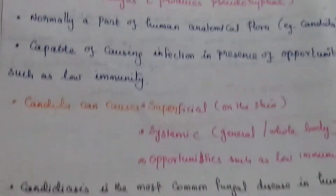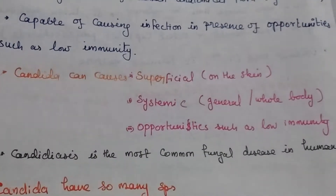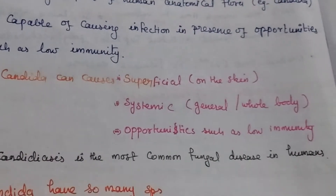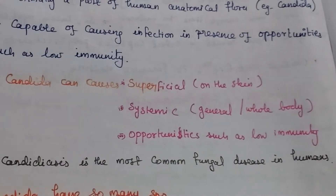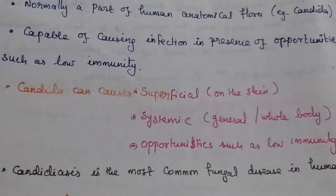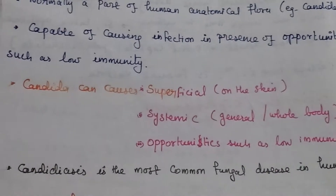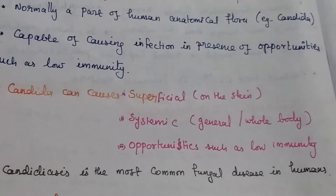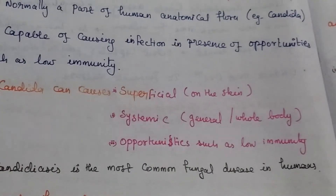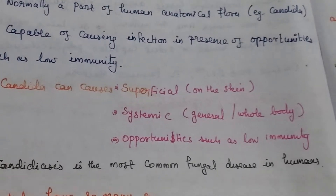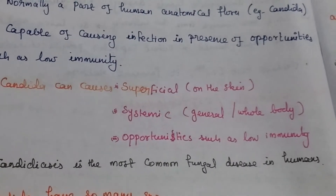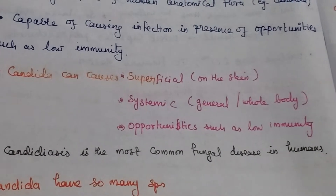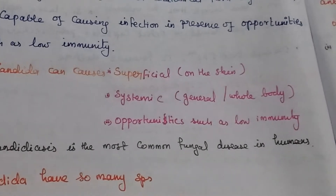Candida can cause superficial, systemic, and opportunistic infection. Superficial means on the skin. Systemic means general or whole body, or opportunistic such as low immunity. Candidiasis is the most common fungal disease in humans.